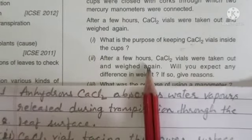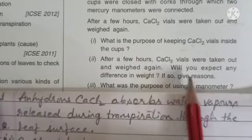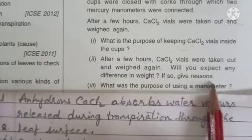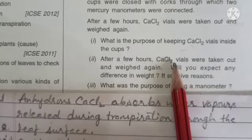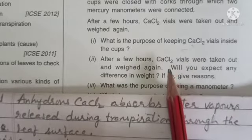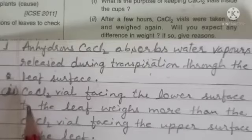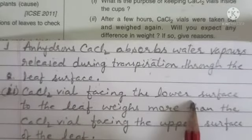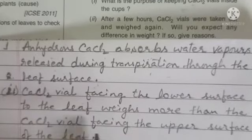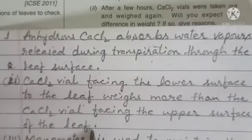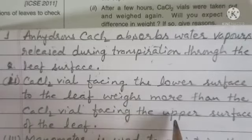After a few hours, the calcium chloride vials are taken out and weighed again. Will there be any difference in weight? Yes — after a few hours, both vials show a difference in their weights. The calcium chloride vial facing the lower surface of the leaf weighs more than the one facing the upper surface, because the lower surface transpires more as compared to the upper surface.